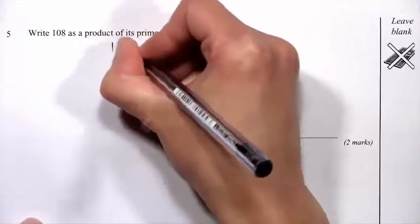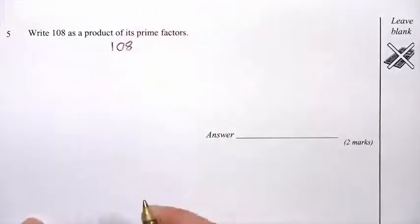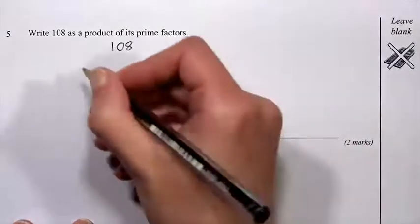I'll start by writing down 108. Now, I need to find two numbers that multiply together to give me 108. I know that 108 is 9 times 12, so I'll use those.